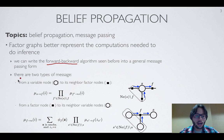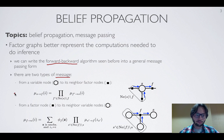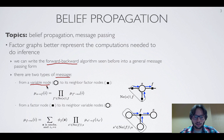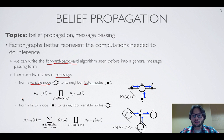There are actually two types of messages, much like there are two types of nodes in a factor graph. There are messages from a variable node — illustrated as a circle — to its neighbor factor nodes, which are the squares. The messages are defined in a recursive form.